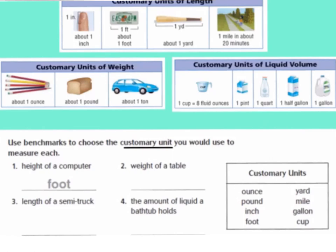Let's talk about our benchmarks of length, weight, and liquid volume. We're going to be talking about customary units, which is what we use in the United States to measure something. Benchmarks give us a way to estimate the amount of something. We used benchmarks when we talked about fractions — zero, one half, and one whole — and they told us where a fraction would be on a number line. So that's what a benchmark for measurement is: we can use it to estimate the length, width, weight, or liquid volume of something.